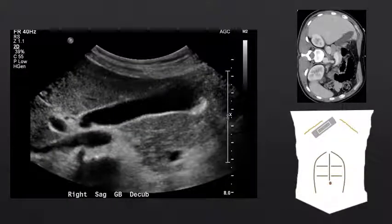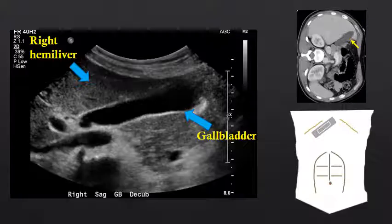If we slightly adjust our probe and remain in a subcostal location in a somewhat oblique transverse orientation, we now see a hypoechoic fluid-filled structure come into view. That is known as the gallbladder. The gallbladder has a thin hyperechoic wall with only one layer and hypoechoic internal fluid. It is just deep to the right hemiliver in the gallbladder fossa, and it divides the right hemiliver from the left hemiliver.